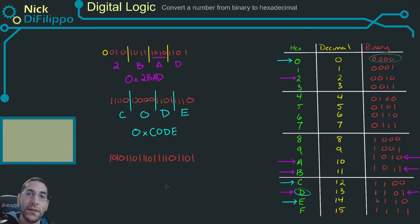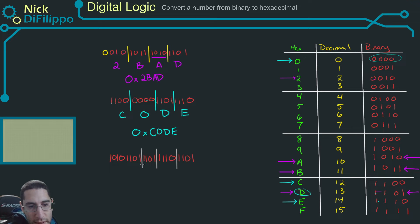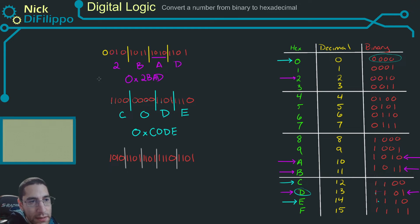Finally, let's look at the last example. Again, we break this up into groups of four bits. We have four bits here, four bits here, four bits here, four bits here, and our last group is also four bits. So we don't need to add any zeros.